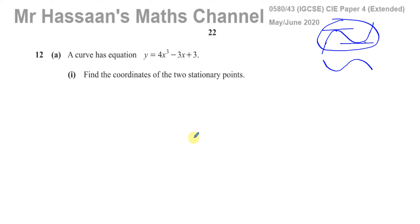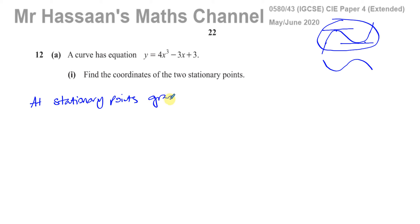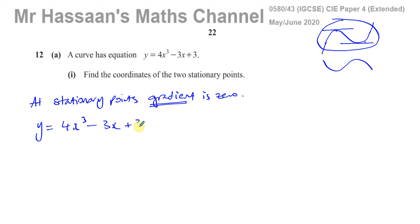To find the stationary points, we use the fact that they have a gradient of 0. The gradient of the curve at a stationary point is 0 because the tangent at that point is horizontal — a line of zero gradient. The gradient is given by dy/dx, the expression you find after differentiating the function. So if y equals 4x cubed minus 3x plus 3, we need to find dy/dx.